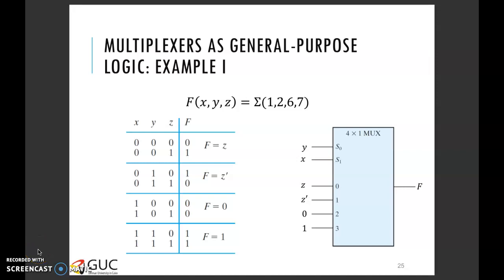In this video I'm going to talk about how one could use a multiplexer to implement a Boolean function for any combinational logic circuit. Given for example this Boolean function f of x, y, and z is equal to the summation of minterms 1, 2, 6, and 7, we're interested in implementing this Boolean expression using a multiplexer.